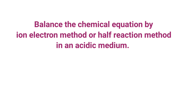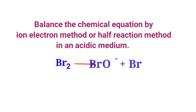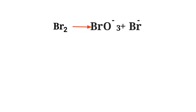Balance the chemical equation by the ion electron method, or half reaction method, in an acidic medium. Bromine gives us Bromide ion plus Bromide ion. Figure the reducing and oxidizing agents by the rules of assigning oxidation numbers.